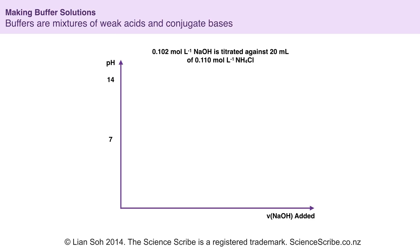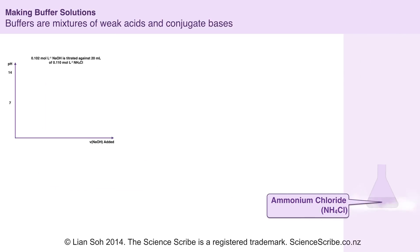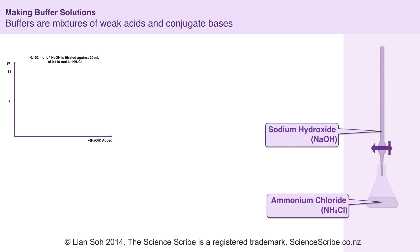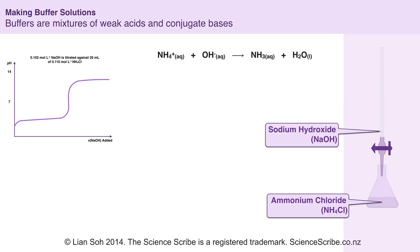Suppose if I was running a titration between sodium hydroxide and ammonium chloride. My weak acid of ammonium chloride is going in the flask while I'm going to place my strong base in the burette. If I was doing this titration I would be aiming for the following reaction between the acidic ammonium ions in ammonium chloride and the hydroxide ions found in the strong base sodium hydroxide. If I was to add the sodium hydroxide and track the pH I would notice the following changes on my titration curve.